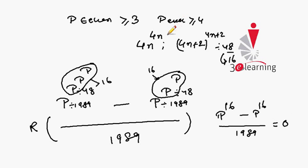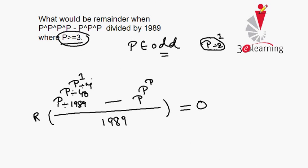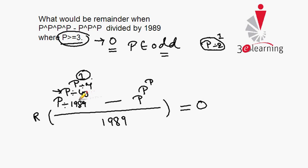So in any case, whether p is even or odd, our final remainder is 0. For p^(p^(p^p)) minus p^(p^p) divided by 1989, under the condition p ≥ 3, we always get a remainder of 0. In the odd case we replaced the uppermost power, and in the even case we worked on the second base, which is 48. I hope it is clear. Thanks.